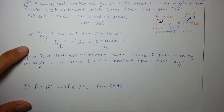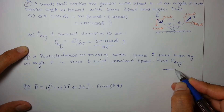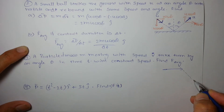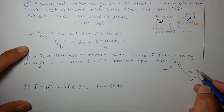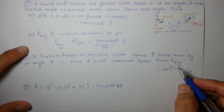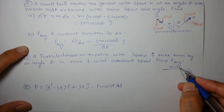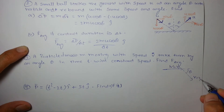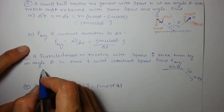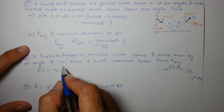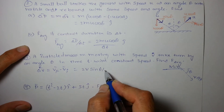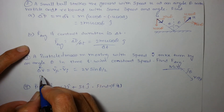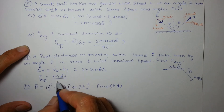A particle of mass m moving with speed v takes a turn by an angle θ in time T at constant speed. To find F_average: the angle between initial and final velocity is θ. Since both have equal magnitude v, the magnitude of change in velocity is 2v·sin(θ/2). Therefore F_average = m × 2v·sin(θ/2) / T.